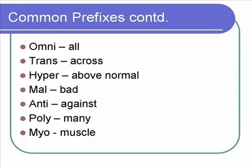'Anti' means against, such as anti-abortion — against abortion. 'Poly' means many; for example, polycystic, meaning many cysts. And then 'myo' means muscle. An example word is myofibrils, or muscle fibers.